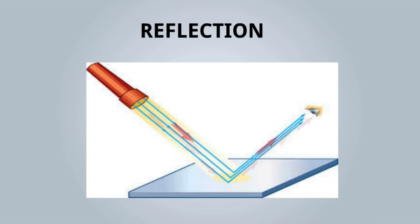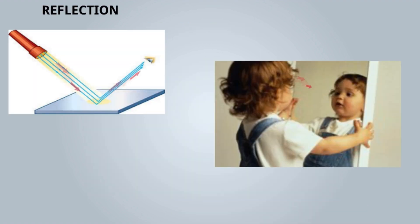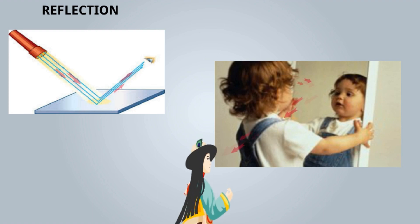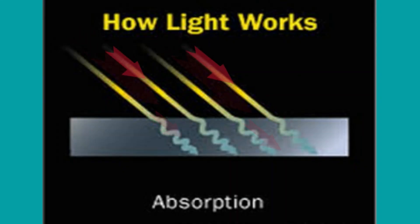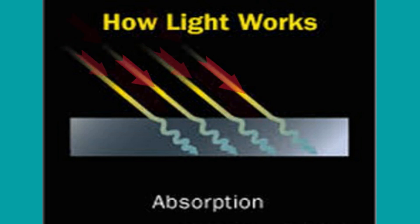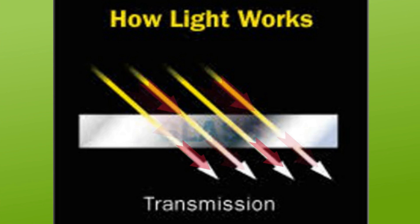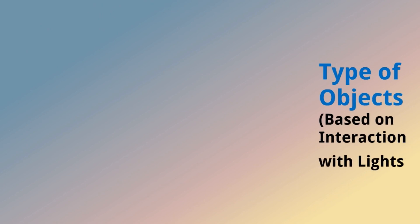For reflection, light is coming from a torch and reflected off the mirror, so we see our image in the mirror. Light rays fall on the mirror and come to our eyes. For absorption, the light is absorbed by the object. For transmission, the light passes through the object.